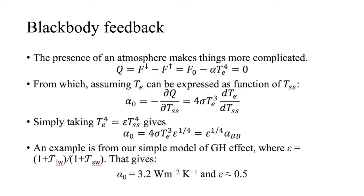Note that this assumed no atmosphere. Having an atmosphere is slightly more complicated because the atmosphere can both emit and absorb. Taking into account greenhouse effects, the feedback parameter drops slightly to about 3.2 W/m²/K, but the nature of this negative feedback remains the same.